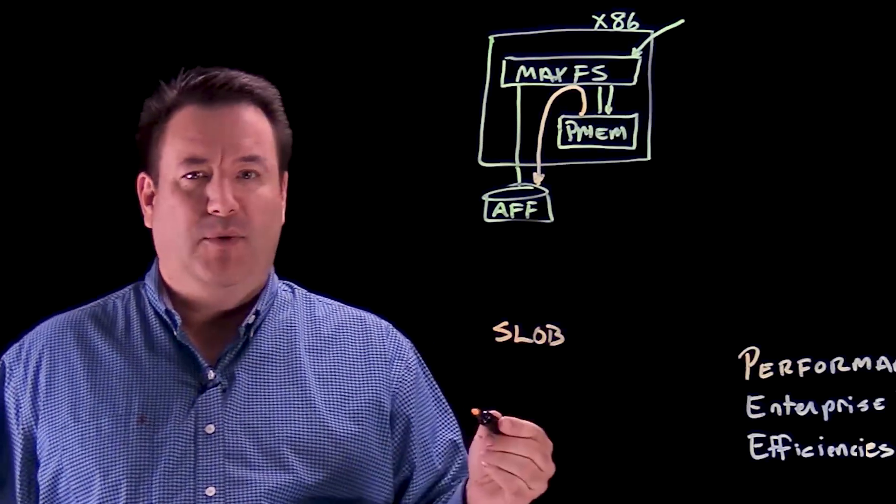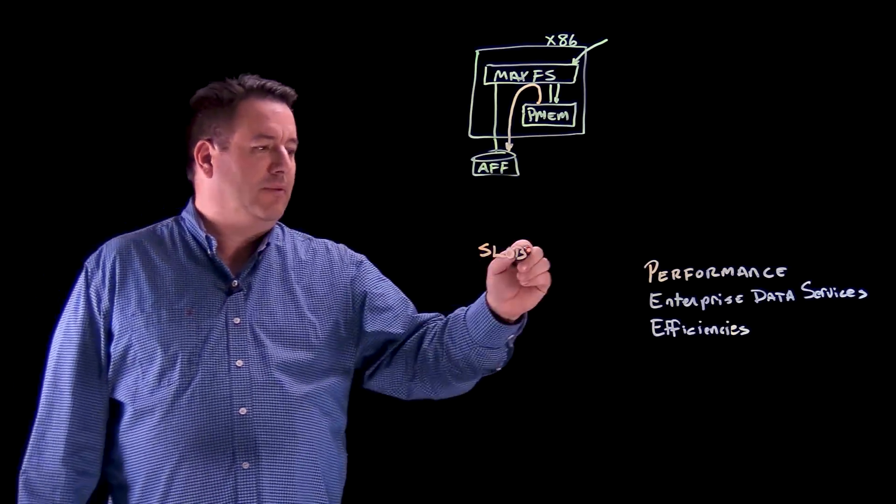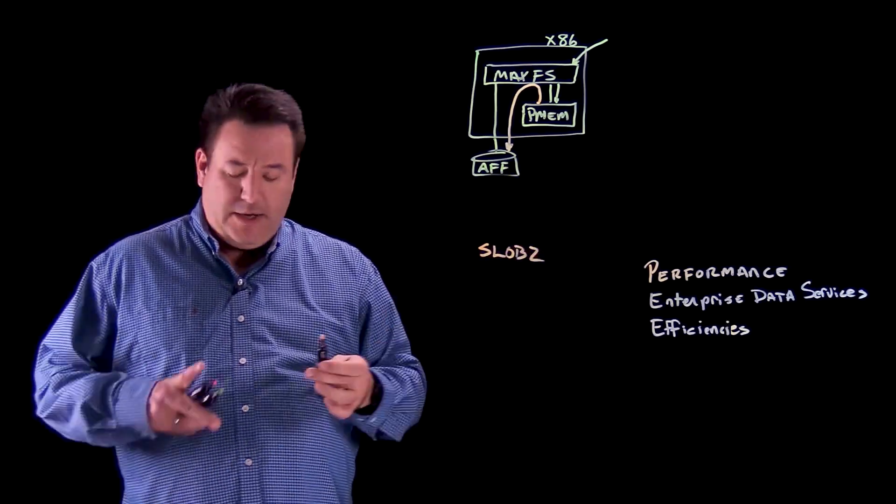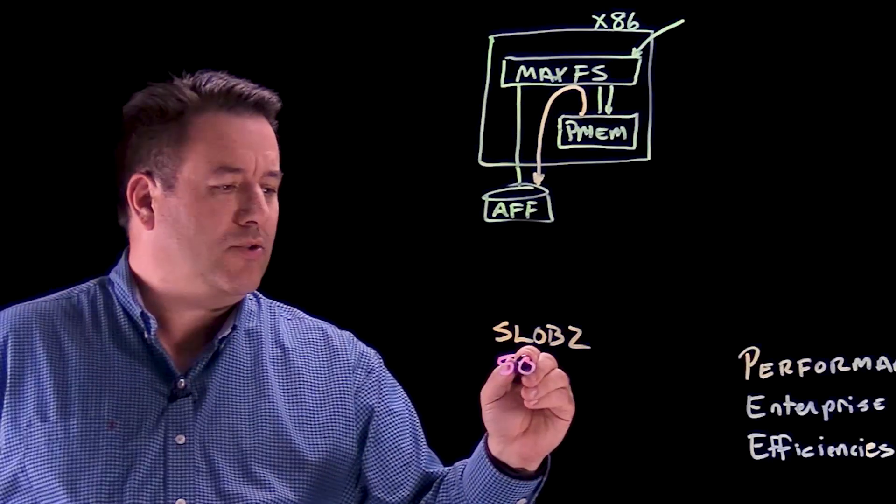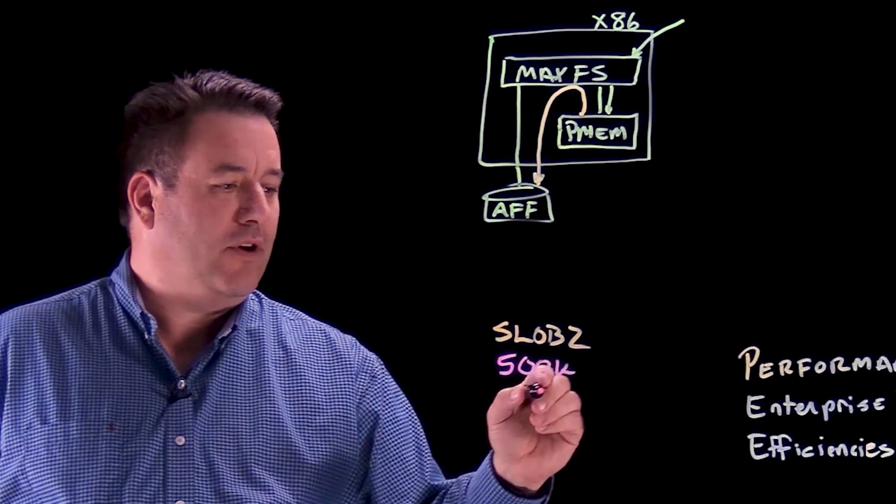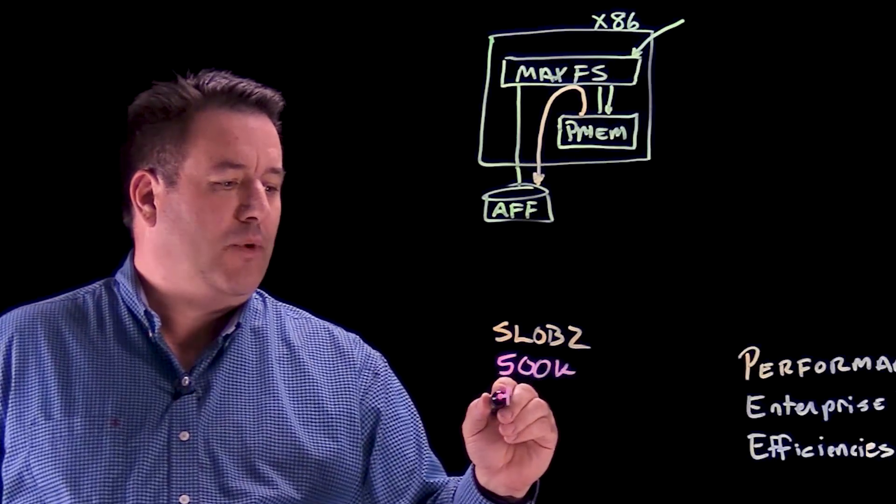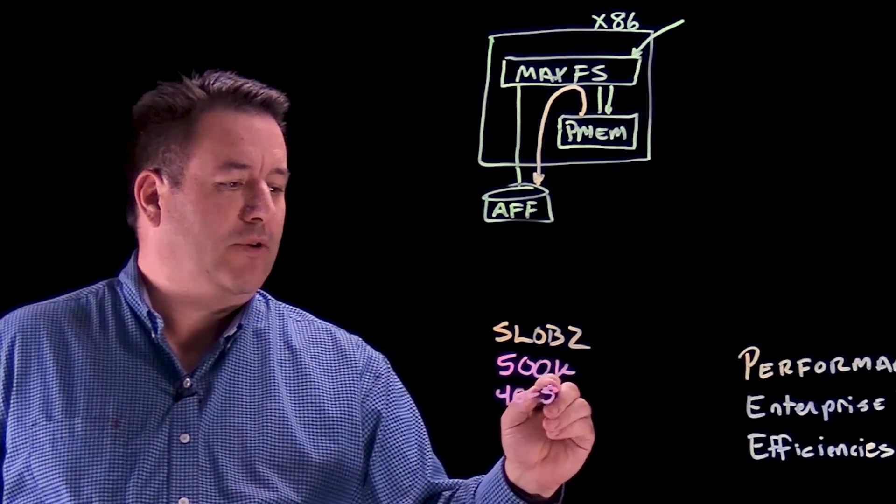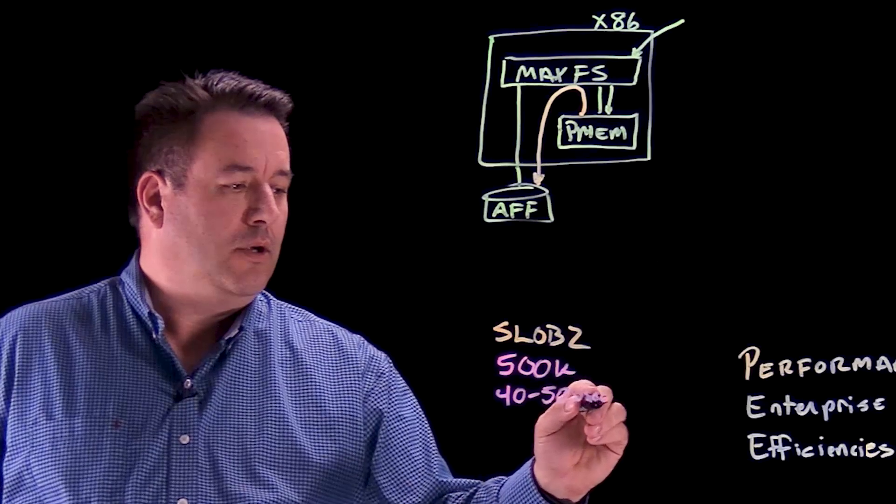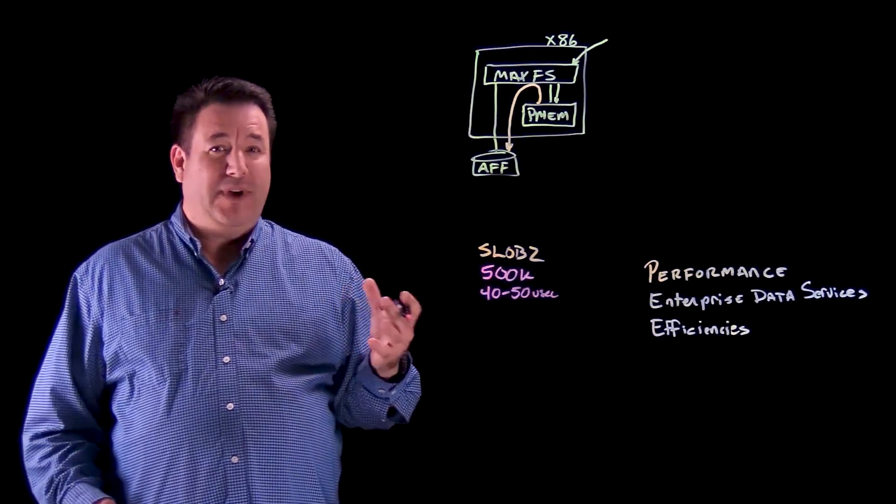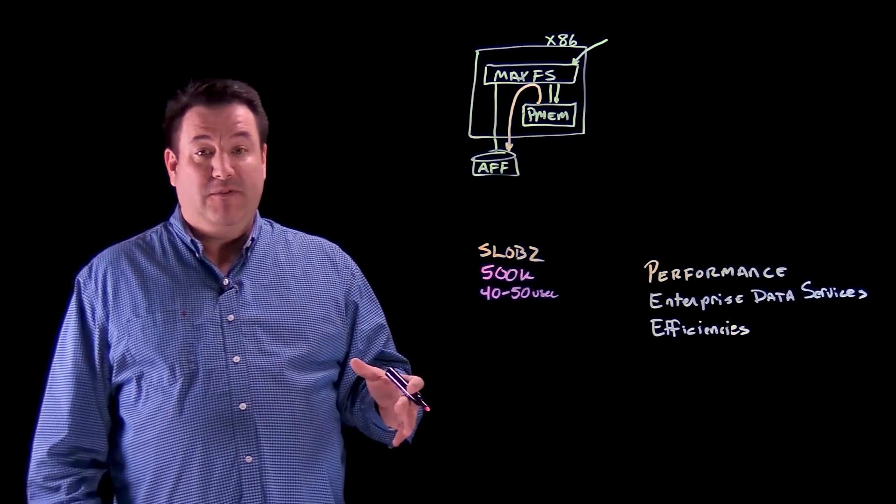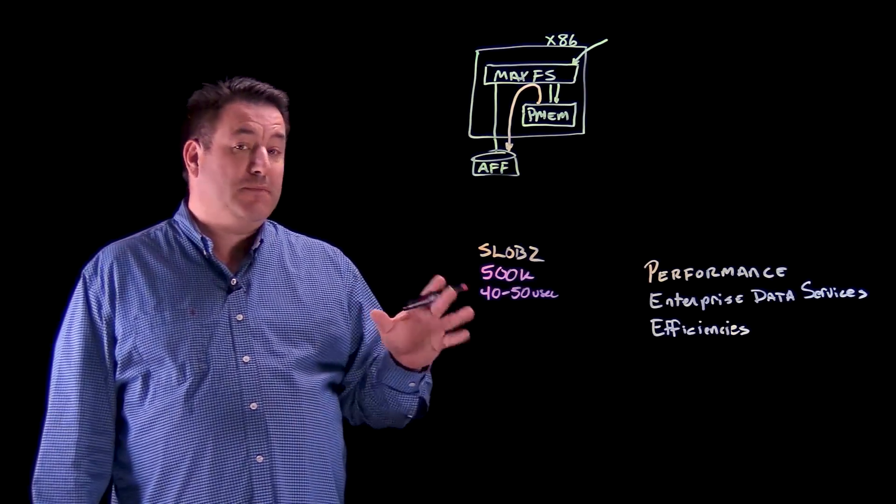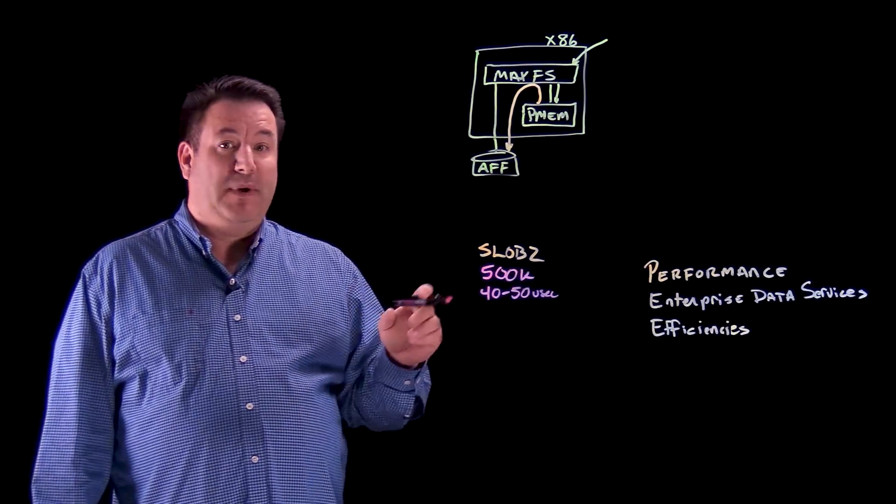We use Slob, which is a silly little old Oracle benchmark, Slob 2 specifically. And with Slob 2, we did this Oracle workload and on a single server, we're able to achieve about 500,000 IOPS at 40 to 50 microseconds of latency. That's four to five times faster than NVMe based storage array or NVMe over fabrics. Much, much faster in response time.